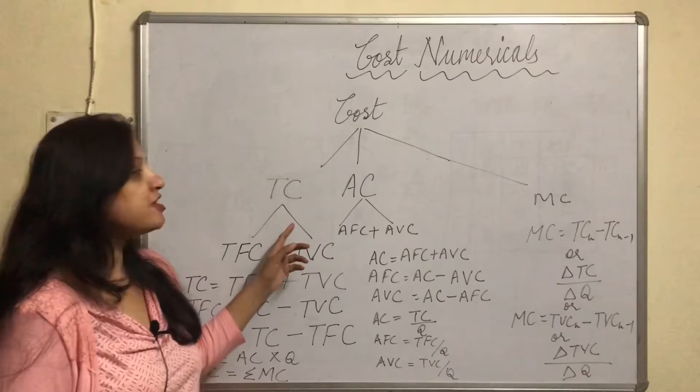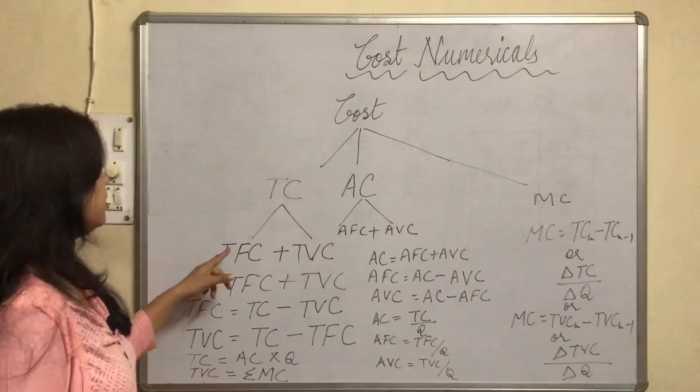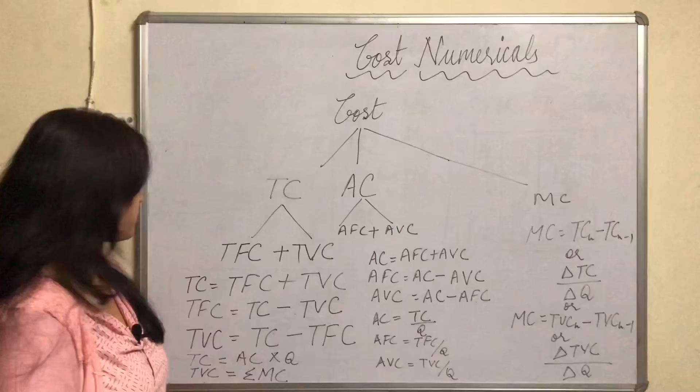There are three concepts related to cost: TC, AC and MC. Total cost is the sum of total fixed cost and total variable cost.